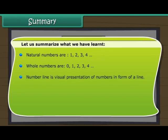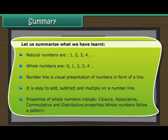Number line is visual presentation of numbers in form of a line. It is easy to add, subtract and multiply on a number line. Properties of whole numbers include closure, associative, commutative and distributive properties.